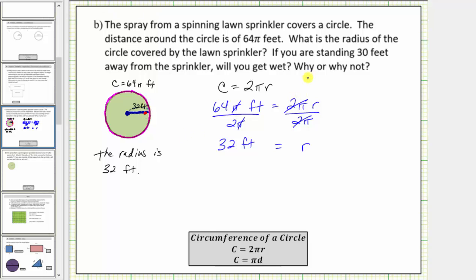So we'll say, you will get wet because, if you are standing thirty feet from the center of a circle, with a radius of thirty-two feet, you will be inside the circle.